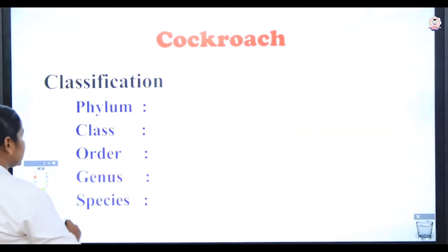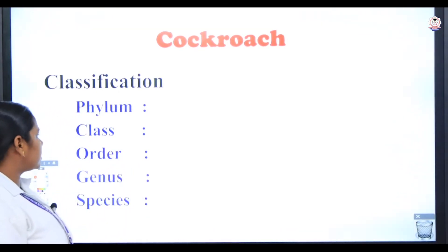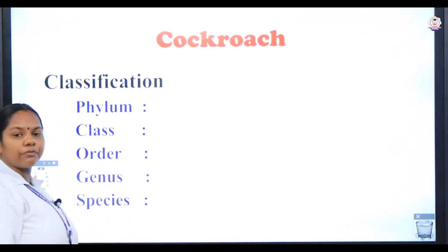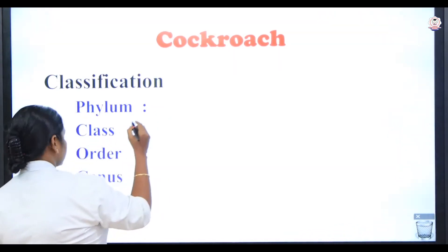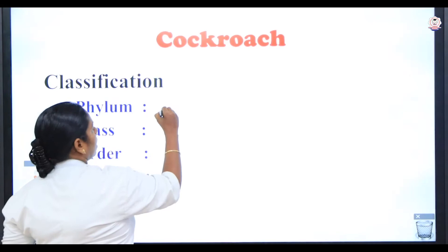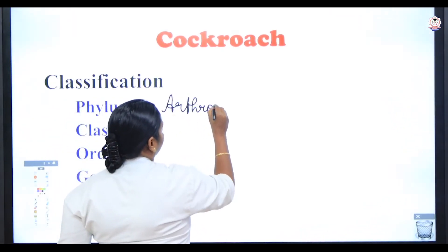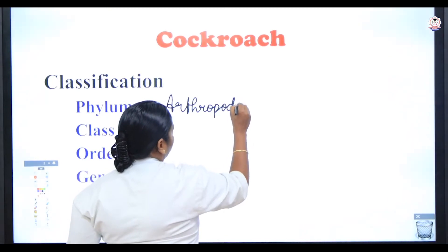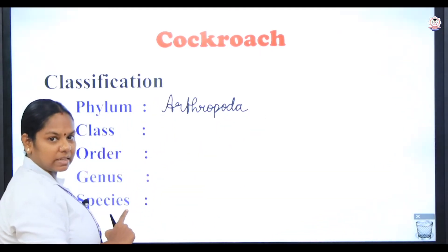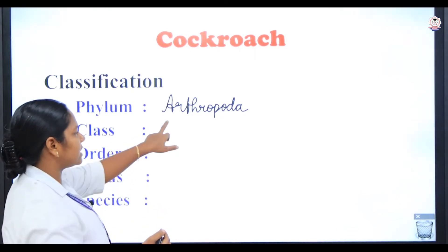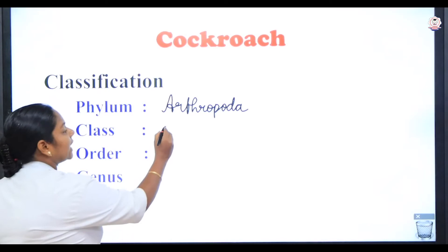Now let us see the classification of the cockroach — this is an important exam question. The cockroach belongs to phylum Arthropoda. Arthros means jointed, poda means feet. Since they have jointed feet, they belong to phylum Arthropoda, class Insecta. We discussed this in the Kingdom Animalia lesson.